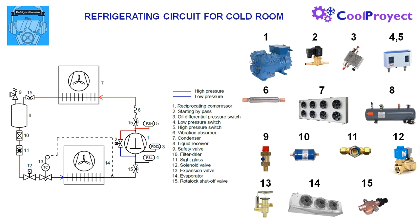Number 10 is the filter dryer, used to catch moisture and solid particles from the refrigerant, and sometimes acids. This must be replaced periodically to ensure proper functioning. Number 11 is a sight glass to check we don't have flash gas in the liquid line — otherwise we have problems with the expansion valve.